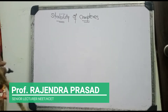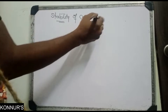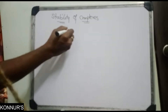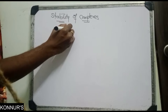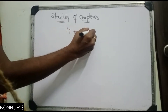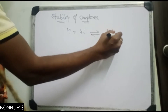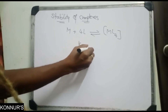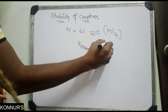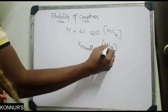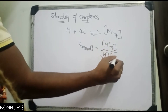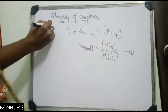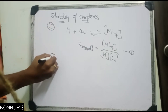We are going to discuss the stability of complexes, specifically the stability constant. Suppose one metal is surrounded with four ligands, giving an ML4 complex. The overall equilibrium constant K is: [ML4] divided by [M] multiplied by [L] to the power of 4.